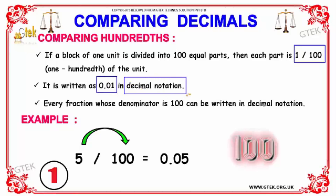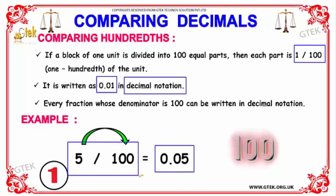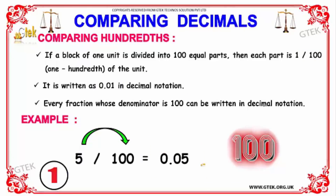So 1/100 is represented as 0.01 in decimal. Every fraction whose denominator is 100 can be written in decimal form — for example, 5 divided by 100 is notated as 0.05. This is how we compare hundreds for a fraction.